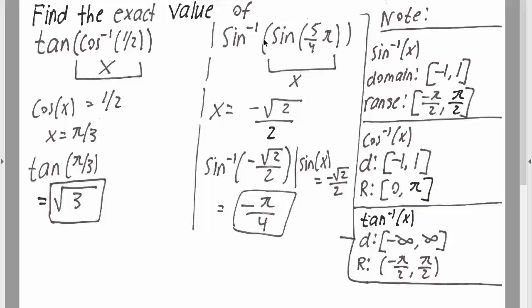This is a little different. This inner term is not using inverse—the overall function uses inverse. So sin(5π/4) is simply -√2/2, and we will be left with sin^(-1)(-√2/2).